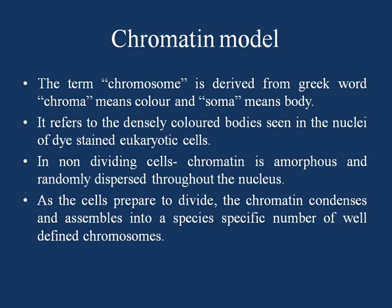In the non-dividing cell, the DNA or genetic material is present in the form of chromatin, which is amorphous and randomly dispersed throughout the nucleus. But as the cell prepares to divide, the chromatin condenses, thickens, and shortens into a species-specific number of well-defined chromosomes. These well-defined chromosomes are formed at the metaphase stage of the cell cycle.